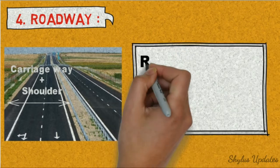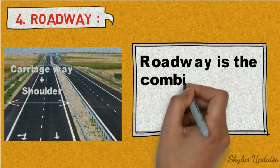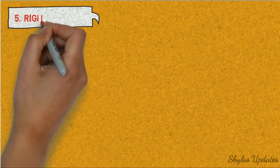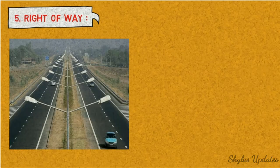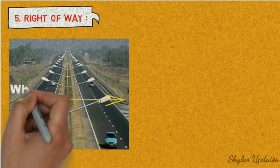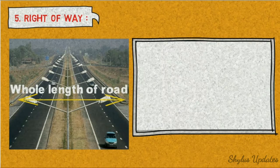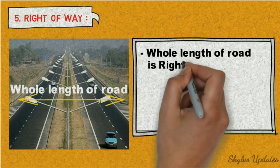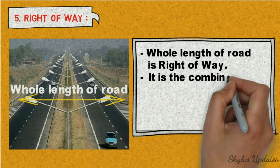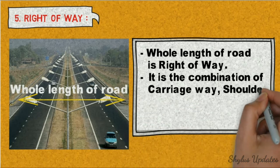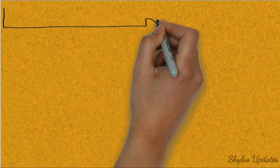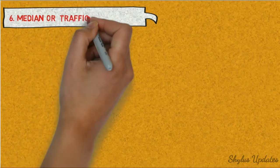Roadway. Roadway is the combination of carriageway and shoulder. Right-of-way is the whole length of road. It is a combination of carriageway, shoulder, margin, and other components of the road.